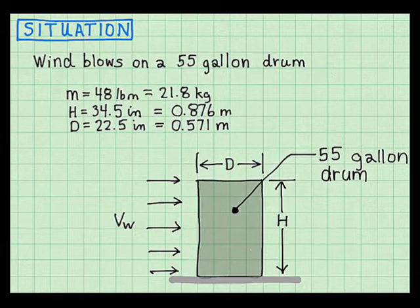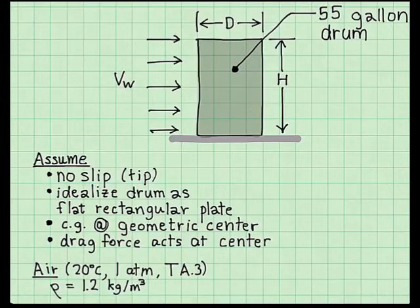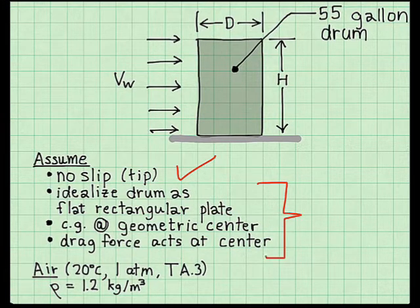I convert my problem variables to SI units. I sketch my situation diagram. I assume that the drum will tip over but not slip. These are some assumptions I wrote down later when selecting a coefficient of drag. Lastly, in the calculations, I wrote down properties here and all I needed was the density of air.